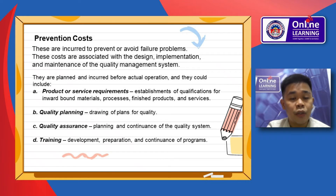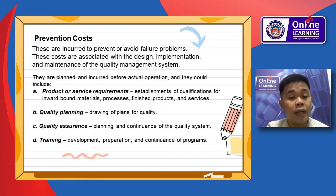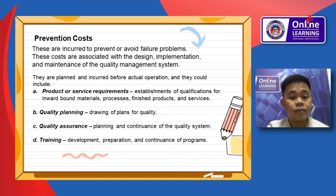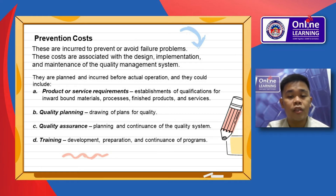For prevention costs, these are costs incurred to prevent or avoid failure problems. These costs are associated with the design, implementation, and maintenance of the quality management system. This includes product or service requirements — the establishment of specifications for incoming materials, processes, finished products, and services. Also included is quality planning, drawing up plans for quality, quality assurance planning, and maintenance of the quality system, as well as training, development, preparation, and continuance of programs.